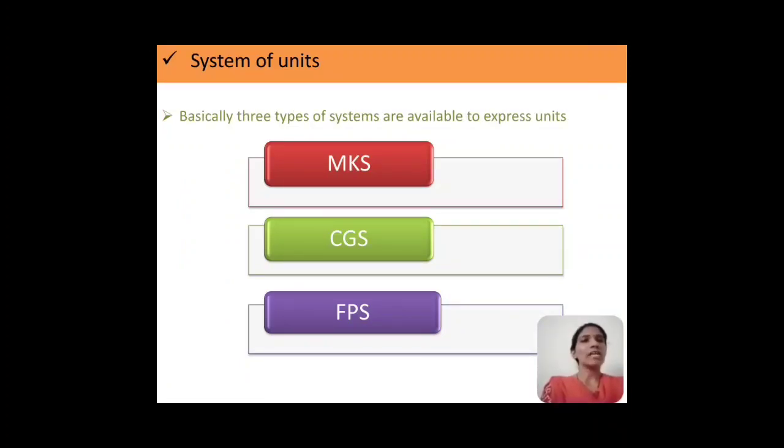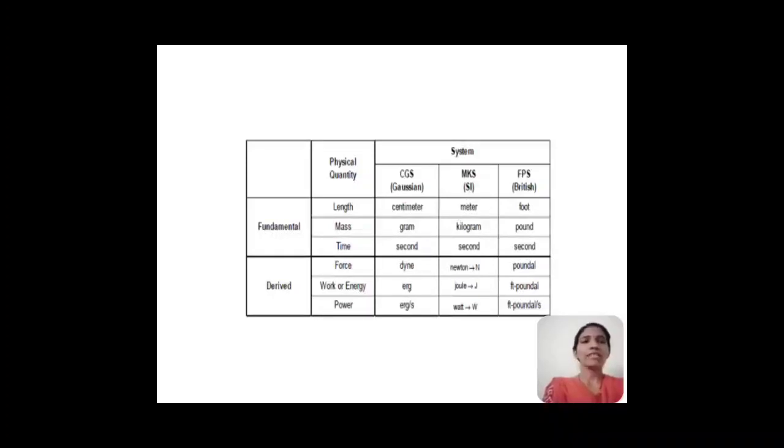Basically, the system of units are divided into three parts: MKS, CGS, and FPS. MKS is meter per second, CGS is centimeter per second, FPS is foot per second. If we take these three systems for the fundamental and derived units, then if we talk about the length, that is the fundamental quantity, then in CGS we can write down the unit as centimeter, for MKS it is represented by meter, for FPS system it is given in terms of foot.